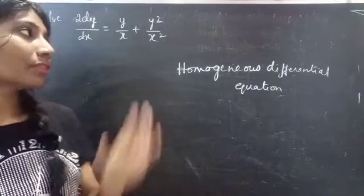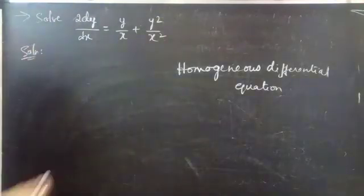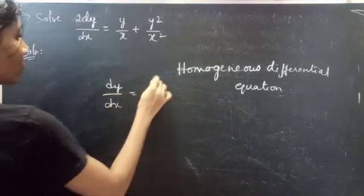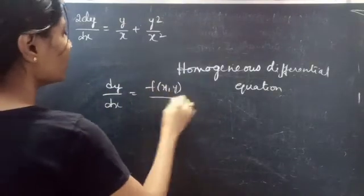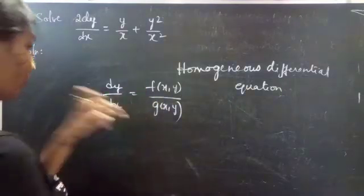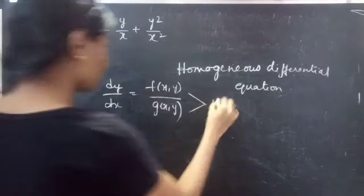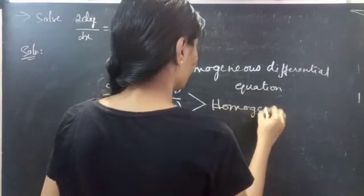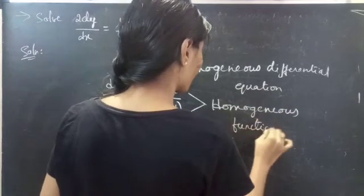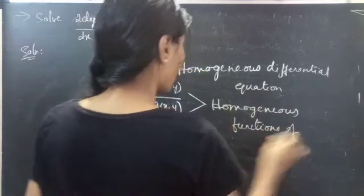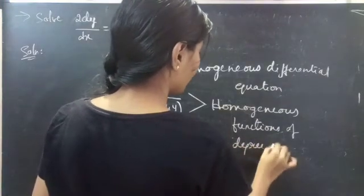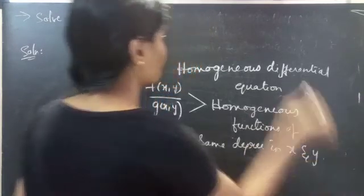We are given a differential equation which is homogeneous. Homogeneous in the sense: we have dy/dx equals f(x, y) divided by g(x, y), where f(x, y) and g(x, y) are homogeneous functions of the same degree in x and y.